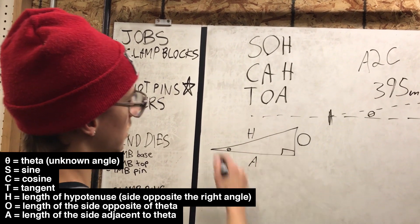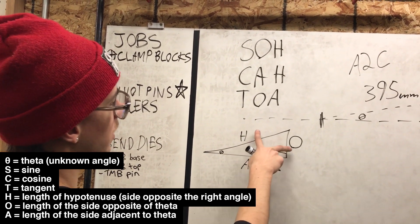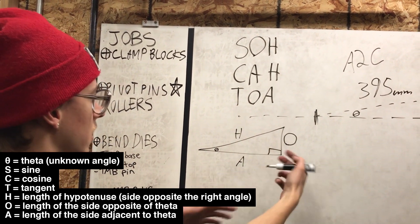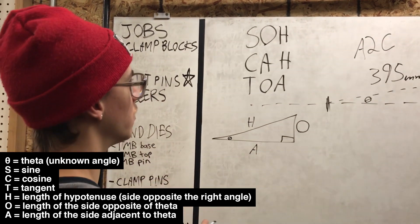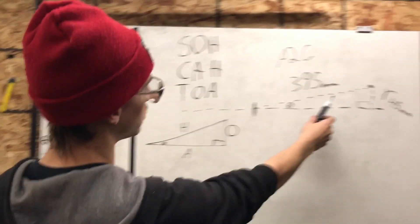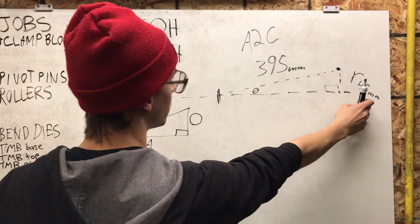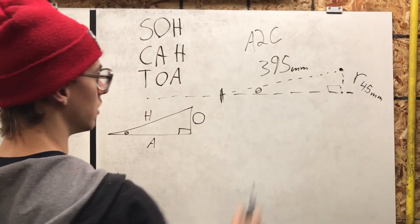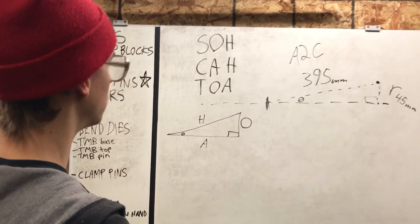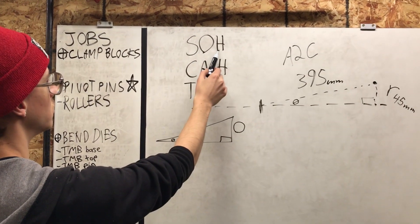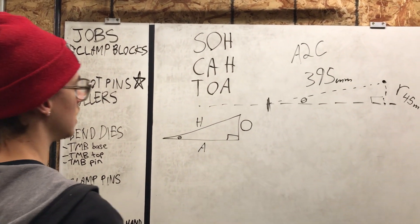And so with these variables, if you have these two, you can solve for the rest of it. And so in this situation, this is our angle right here. We have the opposite, and we have the hypotenuse. Those are the known values that we have. So the opposite and the hypotenuse are the ones we have. So we're going to use a sine function.